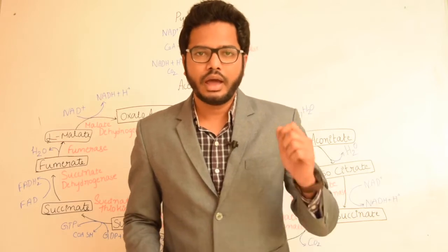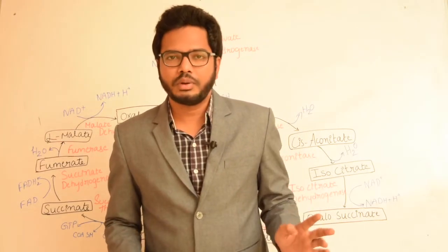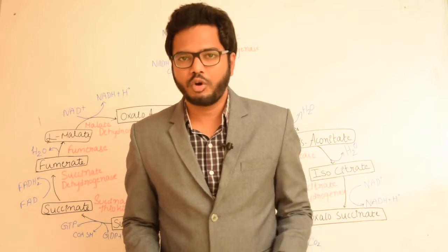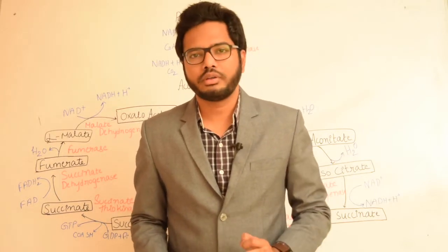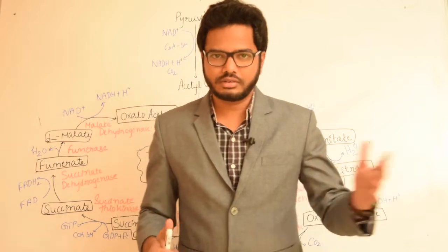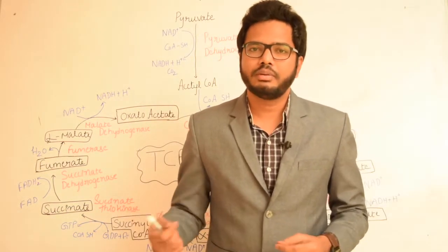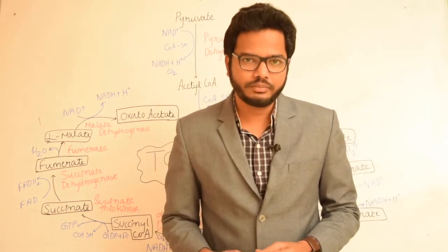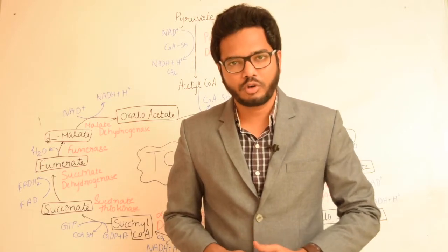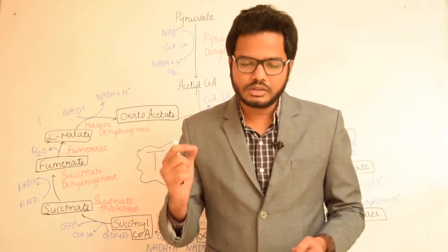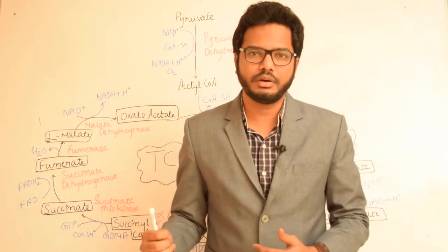Most importantly, this Krebs cycle takes place within the mitochondrial matrix. That's an important point because the other cycles we've discussed — glycolysis and HMP shunt — take place in the cytoplasm, whereas the Krebs cycle occurs in mitochondria.